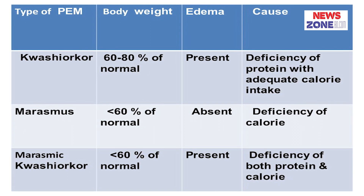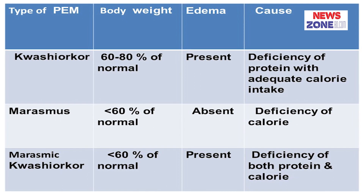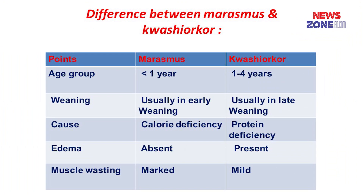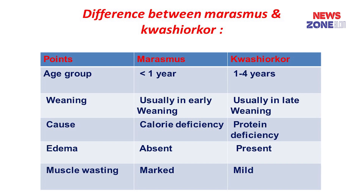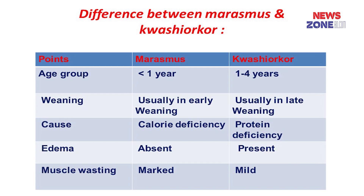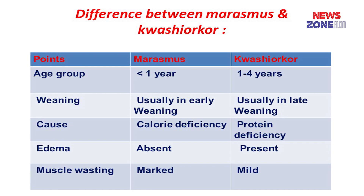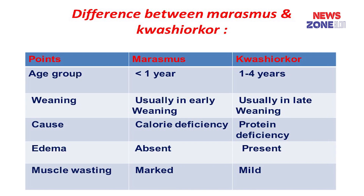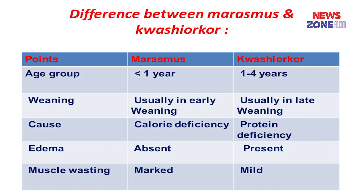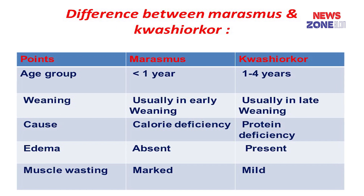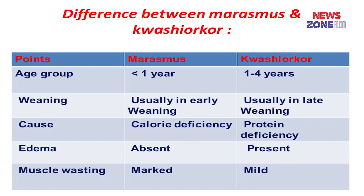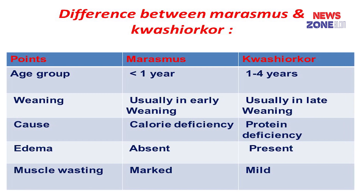Some special important characteristics of marasmus and kwashiorkor babies. In marasmus, the age group affected is less than 1 year. It is caused by calorie deficiency. In marasmus babies, edema is absent but severe muscle wasting is present. Hepatomegaly is absent. Marasmus babies are restless in mental condition. Severe growth retardation is present, and their protein or albumin concentration is normal or very low.